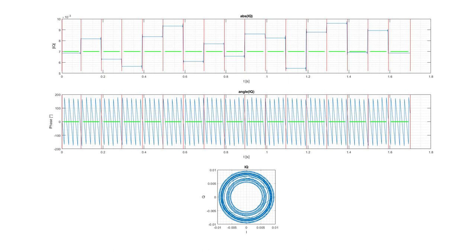In the software, we can see the recorded IQ data over time. The software automatically recognizes that we have switches between the elements, as marked with red lines, and will analyze only the green areas. This leaves a little bit of a guard period around the switches.